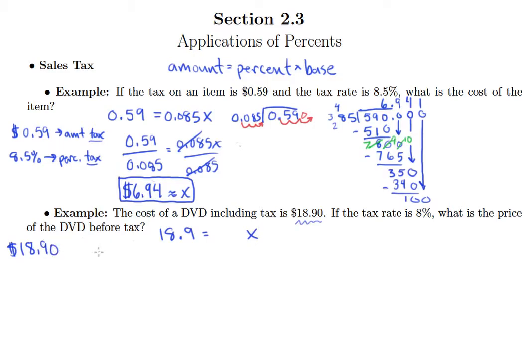Well $18.90 is not just the amount of tax. It is the cost of the DVD plus tax. So this is the original cost plus the tax. That's what $18.90 is. Okay well what is 8%? 8% is just the percent tax, the tax as a percentage. So what's missing here?